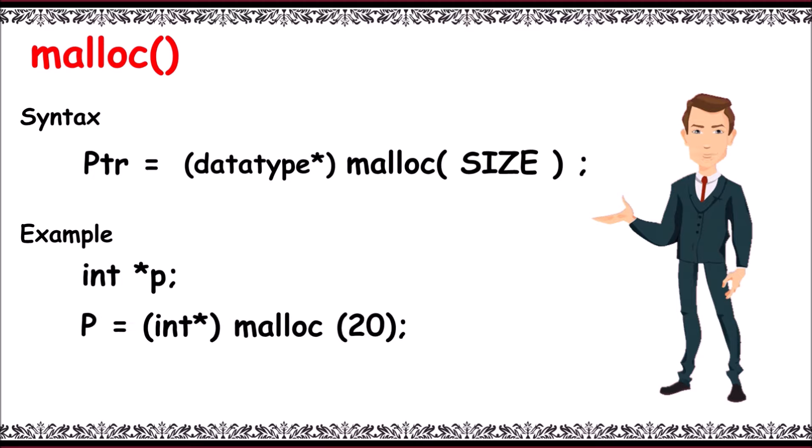Here 20 bytes of memory will be allocated. Or we can write like P equals int asterisk malloc of n comma size of int. Here n value to be taken at runtime.